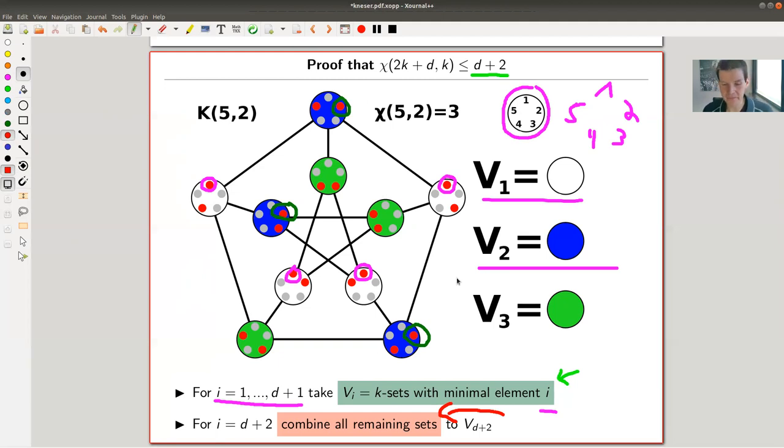Why does this produce a coloring? Well, by construction, each element in V_i intersects because they have the same minimal element. And by again the pigeonhole principle, you can also show that all the elements from the d+2 intersect as well. And remember that we built our graph by putting edges whenever sets intersect. Well, this definitely produces a coloring. And because this is so easy and maybe because Kneser then tried to do better and failed, Kneser conjectured that this is the best or this is really the best you can do.